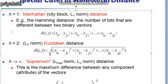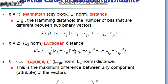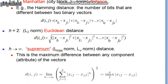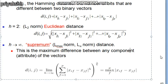If we put h equal to 2, we square the differences, sum them, and then take the square root — this is known as the L2 norm or Euclidean distance. If we put h equal to infinity, this is known as the supremum distance, L-infinity norm, or L-max norm. It is defined as the maximum difference between any component attribute of the two vectors.